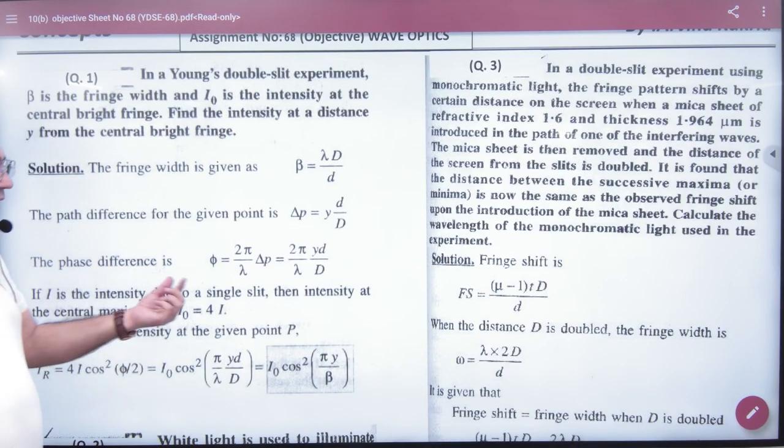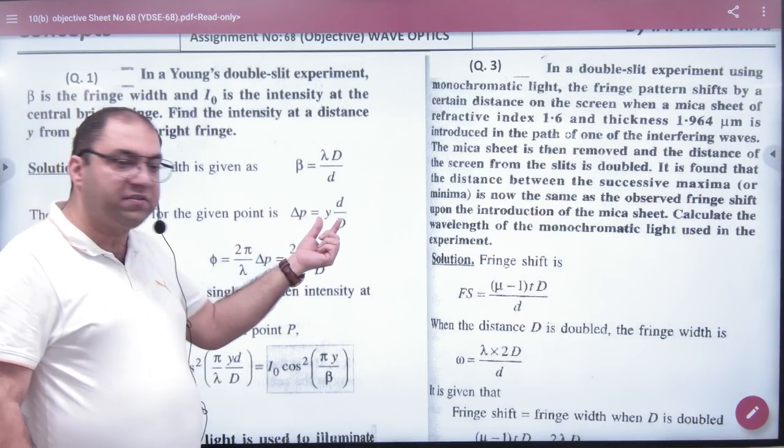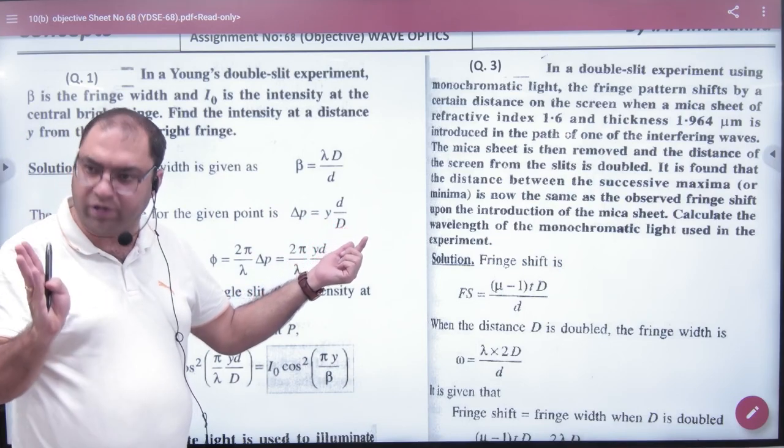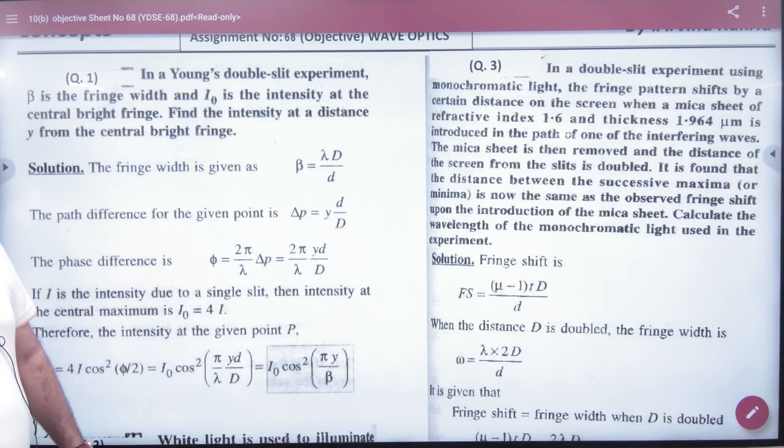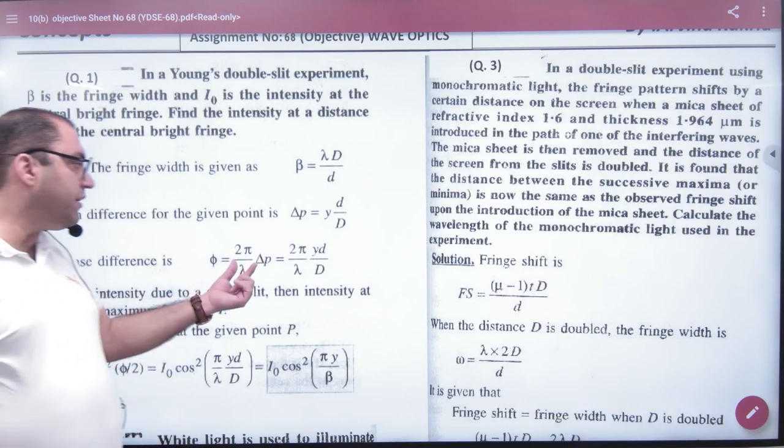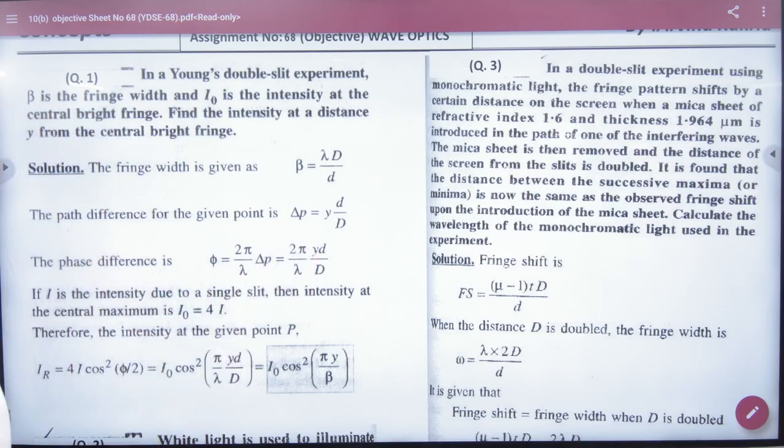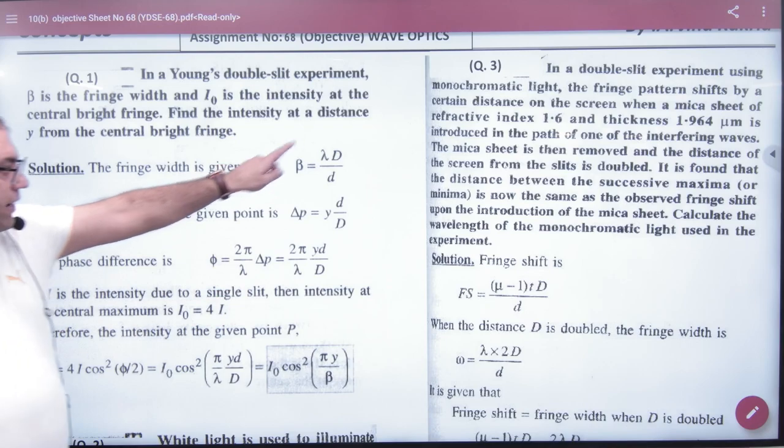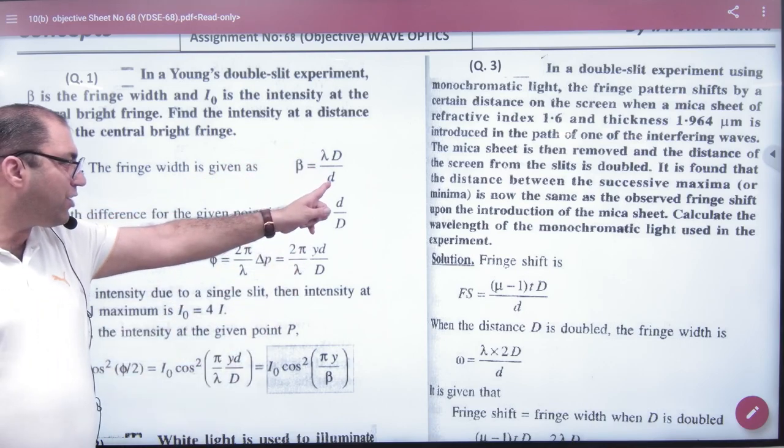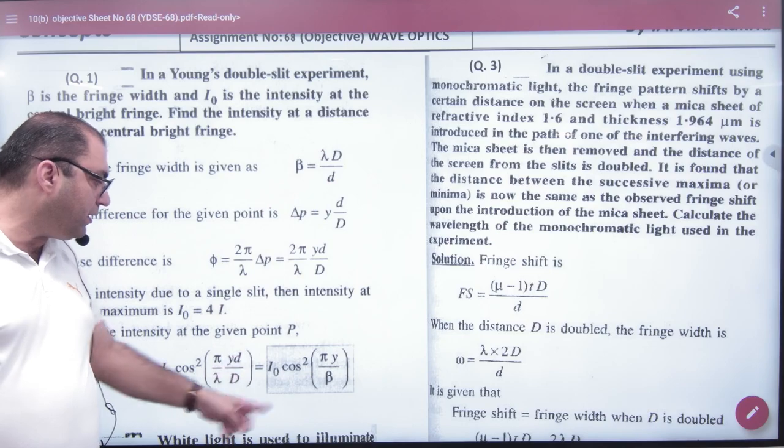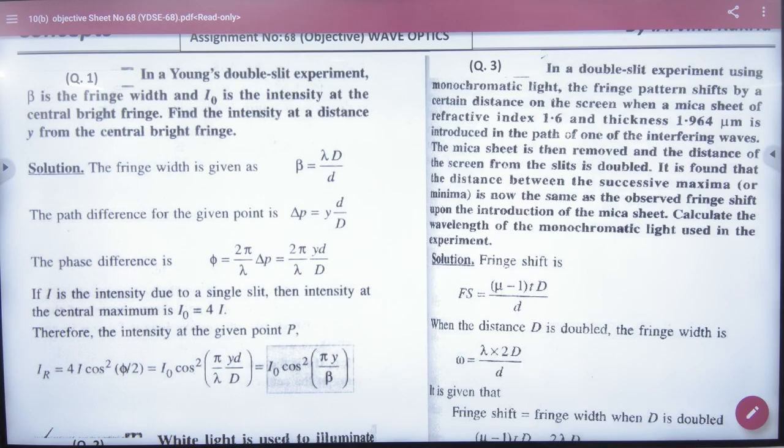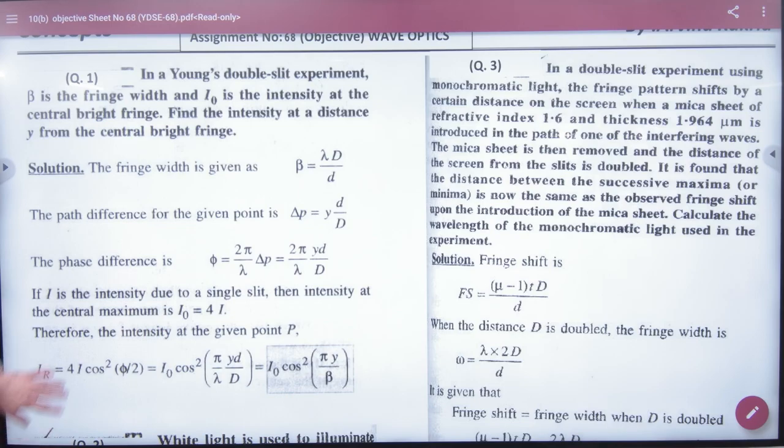Now we are going to y height. So what will you have path difference? y into d. We are saying x and y. So path difference is x d by D, then y d by D. So what will phase difference be? 2π by λ into path difference. This phase difference we will put here. Beta formula λD by d, here the capital D by d ratio will come to beta by λ. So we will put here beta by λ. Answer. The point is coming in the same theory that the answer was given.